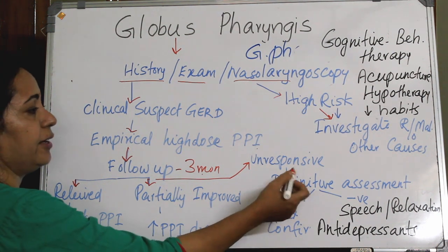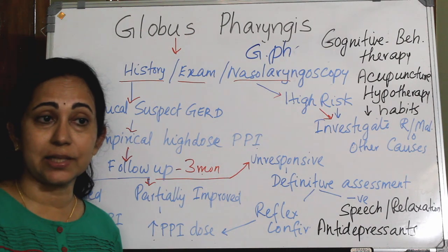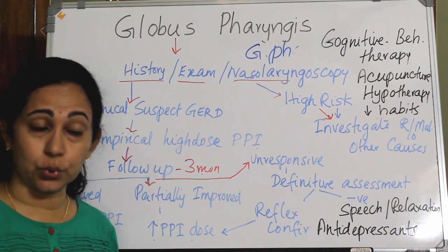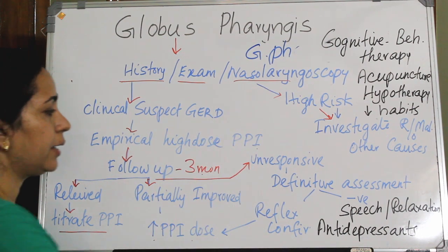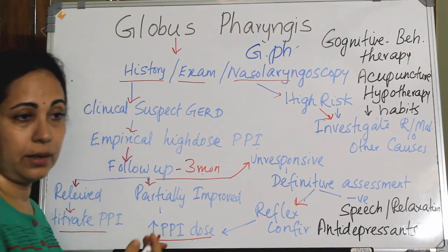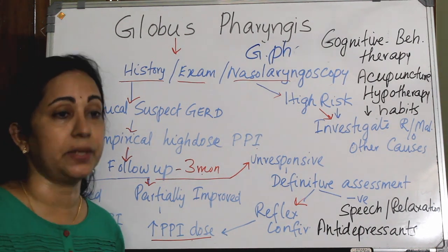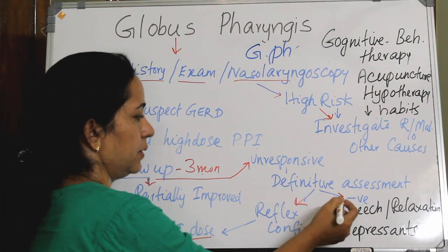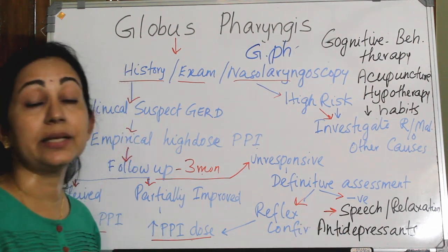For definitive assessment, perform barium swallow, fluoroscopic assessment of swallowing, and all other relevant investigations to confirm or rule out GERD. If GERD is confirmed, increase the PPI dose or consider surgical techniques such as fundoplication in highly selected patients. If no evidence of GERD is found, proceed to other treatment modalities for Globus.